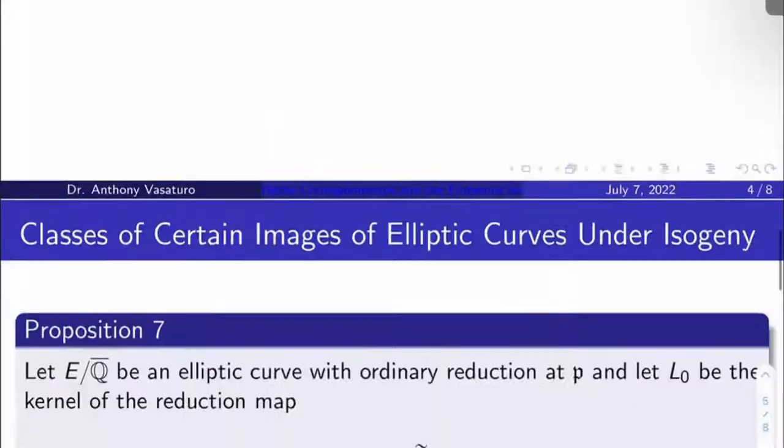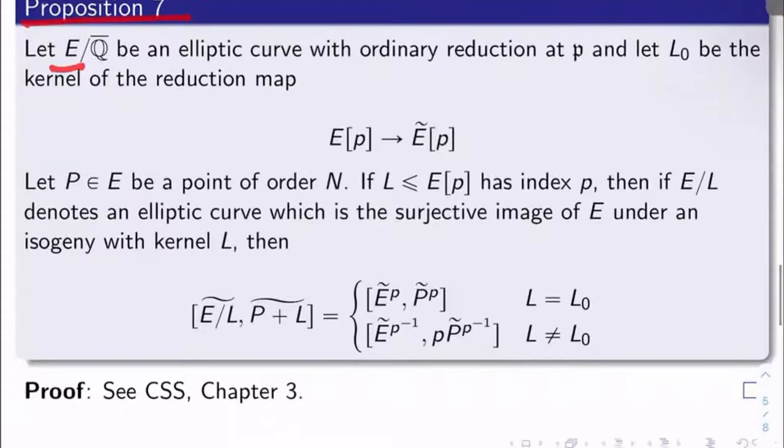So the first of two big results for today, proposition 7. Let's let E over Q̄ be an elliptic curve with good ordinary reduction at ℘. Let's let L₀ be the kernel of the reduction map from the p-torsion of E to the p-torsion of Ẽ.